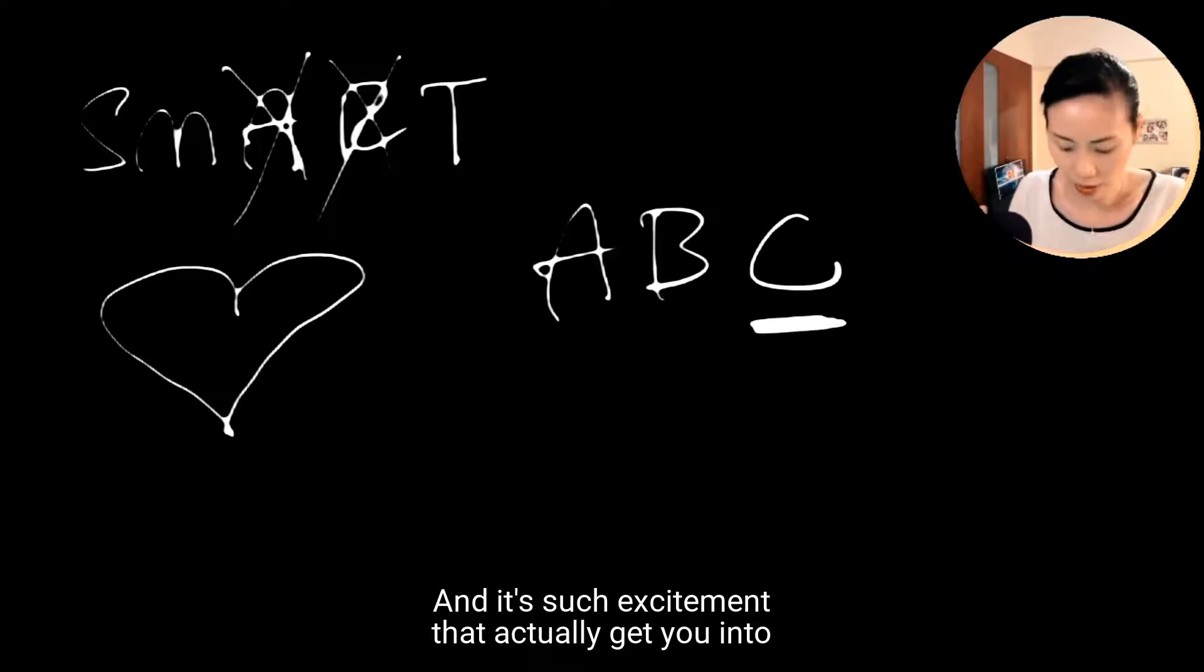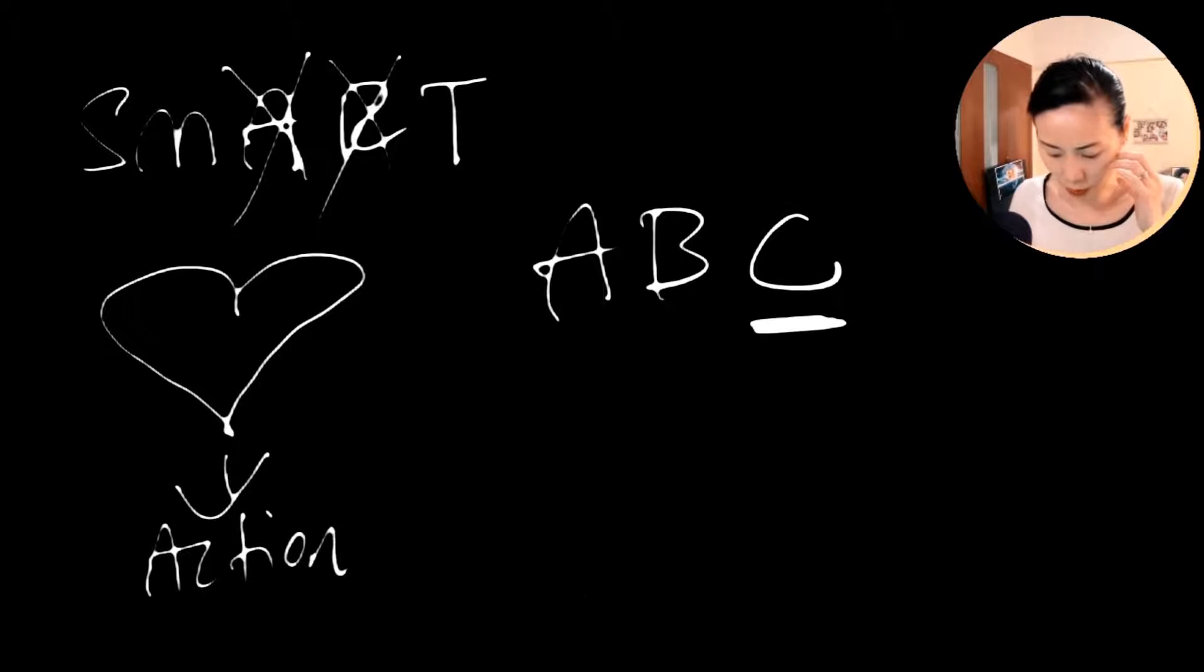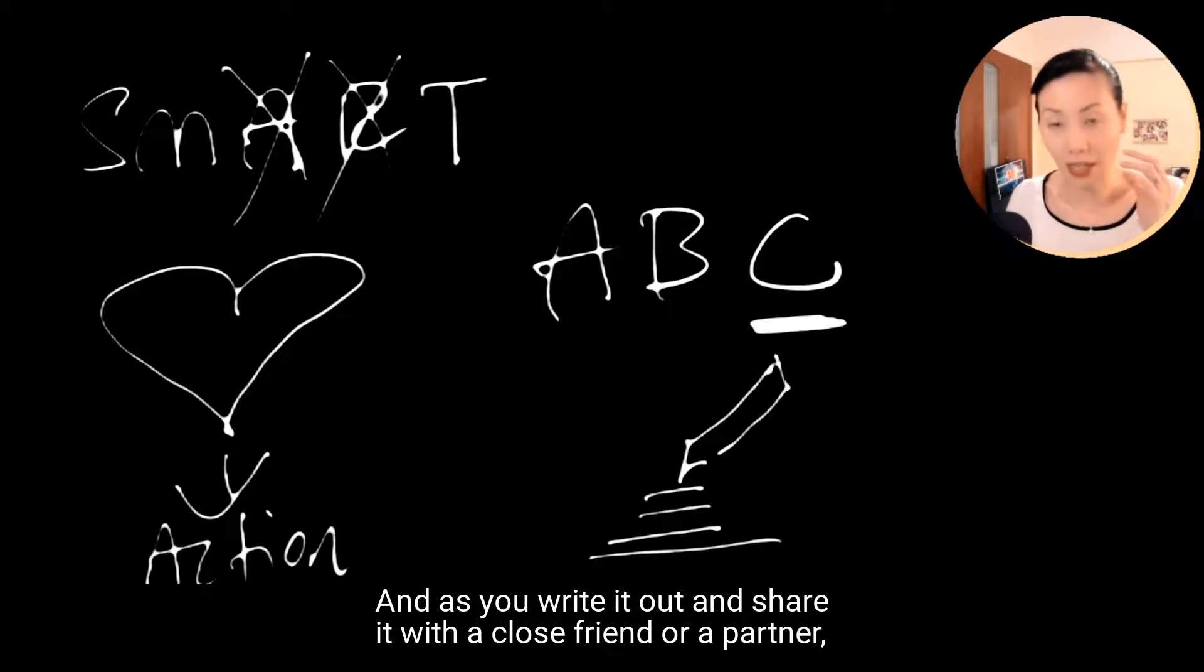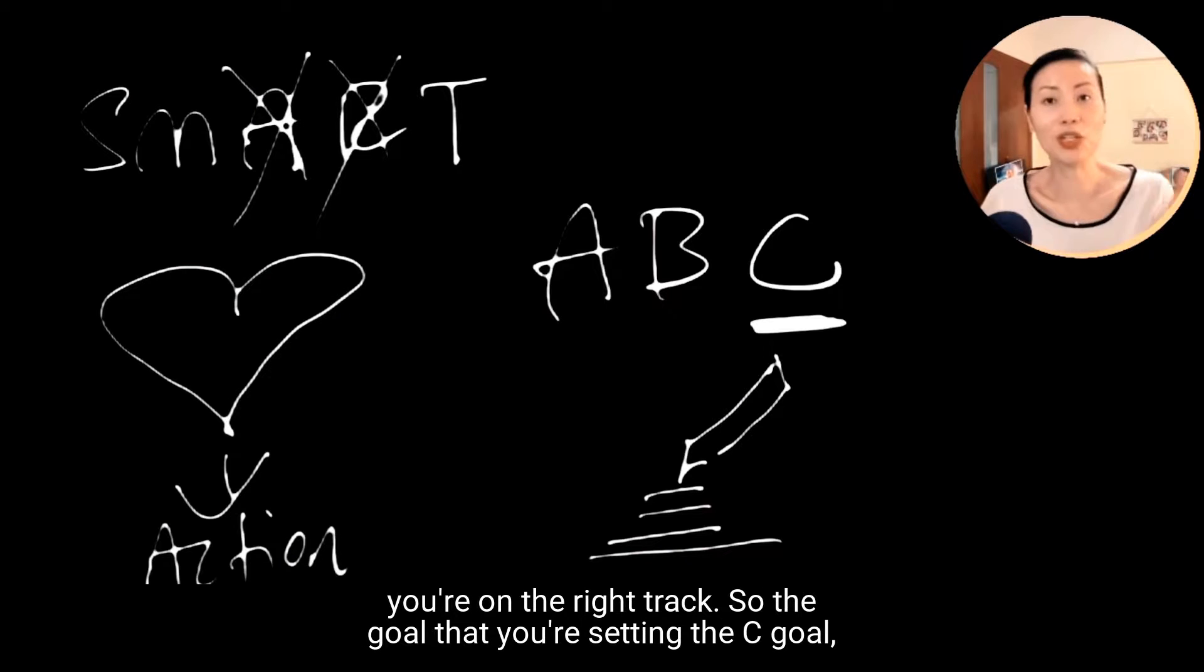It's such excitement that actually gets you into action. So when you start to plan down your C-type goals, literally take a pen and write out your C-type goal, and as you write it out and share it with a close friend or partner and they look at you thinking that you've lost your marbles, you know you're on the right track.